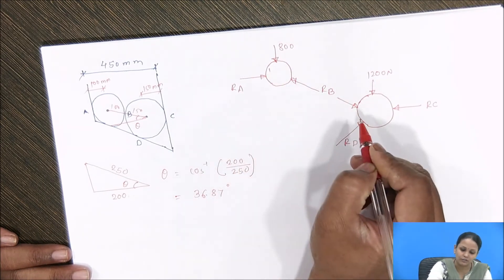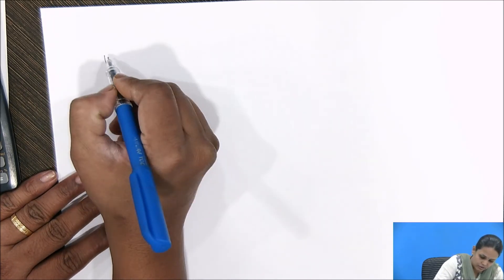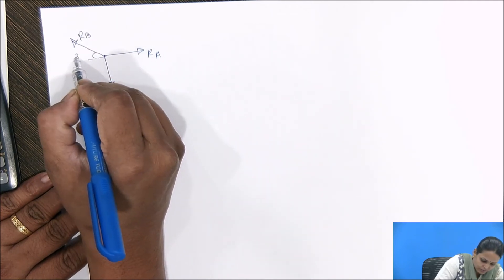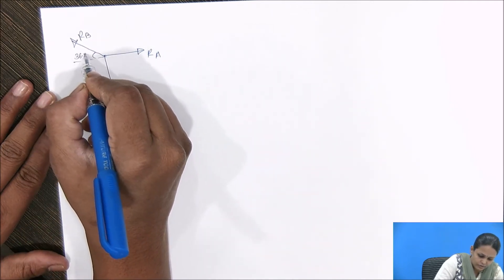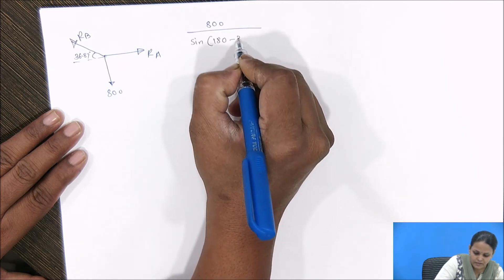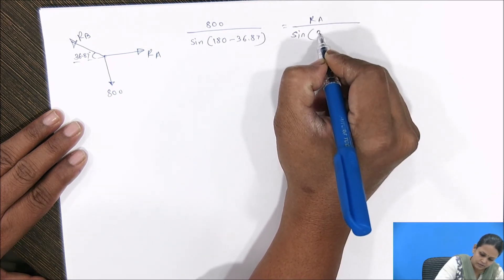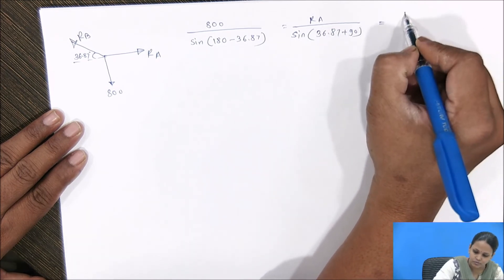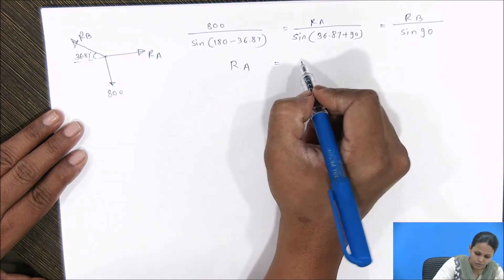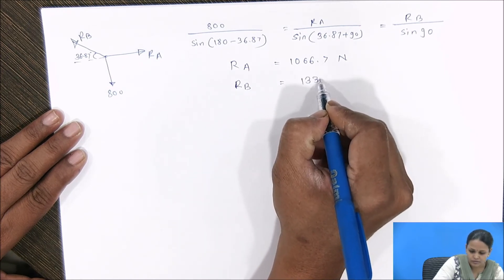Applying Lami's theorem for sphere 1, with weight acting downward, reaction RA, and reaction RB at inclination 36.87 degrees: 800/sin(180 − 36.87) = RA/sin(36.87 + 90) = RB/sin(90). From this equation, RA = 1066.7 Newton and RB = 1333.3 Newton.